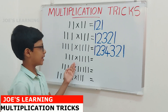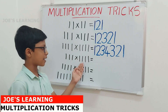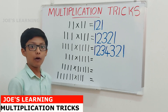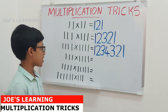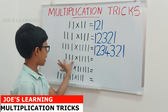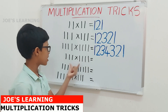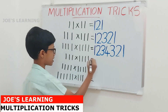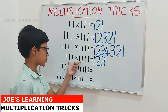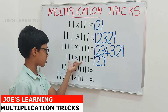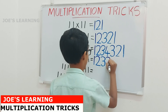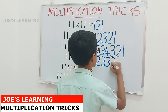Now let us look at 111 multiplied by 1111. In this case the number of digits are unequal. We check which number has the smallest number of digits — this number has 3 digits and this number has 4, so 111 is the smallest. We keep increasing until we reach number 3. Then we find the difference: 4 minus 3 equals 1, so we write the last digit one more time, and then go on decreasing until we reach 1.